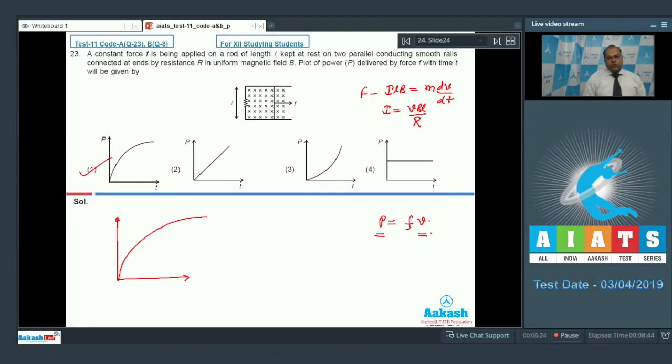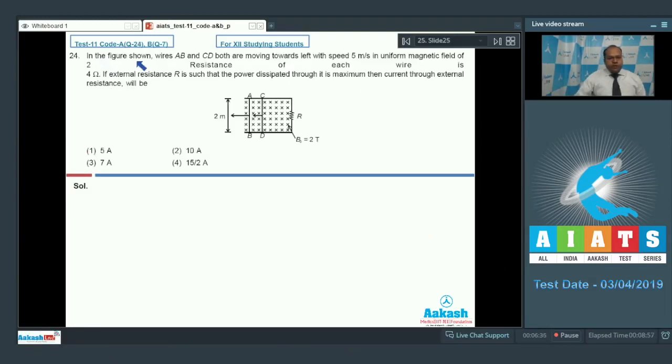Let's move to question number 24. In question number 24, in the figure shown, wires AB and CD both are moving towards left with speed 5 meter per second in uniform magnetic field of 2 Tesla. Resistance of each wire is 4 Ohm. If external resistance R is such that the power dissipated through its maximum,